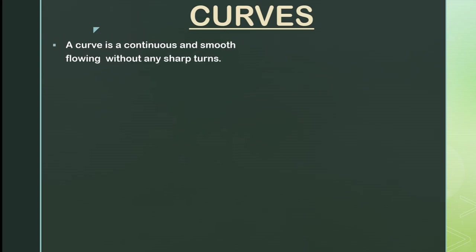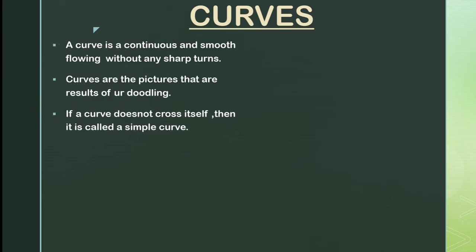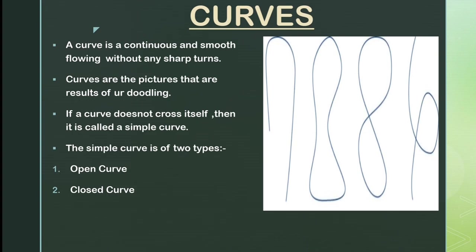Next comes curves. A curve is a continuous and smooth flowing path without any sharp turns. Curves are the pictures that are results of your doodling. If a curve does not cross itself, then it is called a simple curve. The simple curve is of two types: open curve and closed curve. You can see in the figure there are various examples of curves.